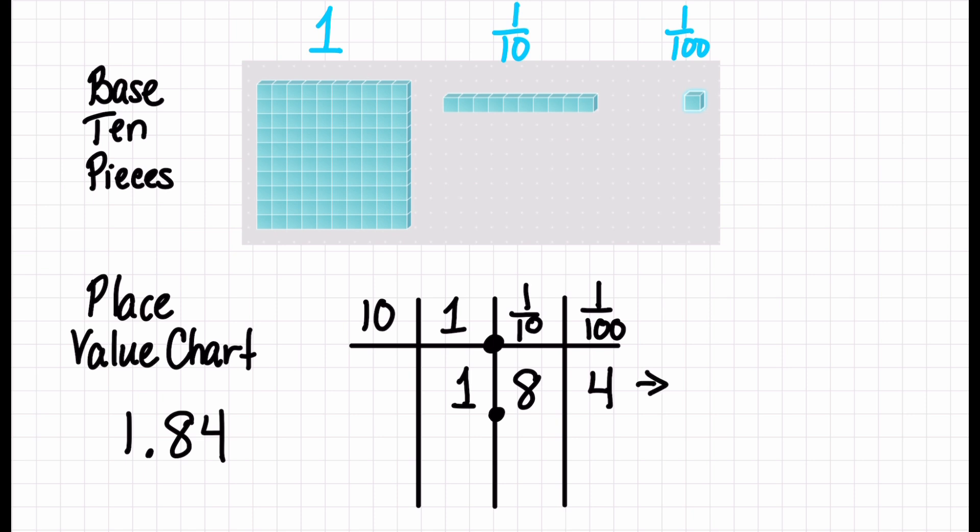That's super helpful because now if I were to write this in expanded form, I can write one plus eight-tenths plus four-hundredths. Or you can see this as one and eighty-four hundredths, because my last digit is in the hundredths place. So I can use eighty-four of these little pieces, eighty-four of them, and so I can represent them as eighty-four out of a hundred.